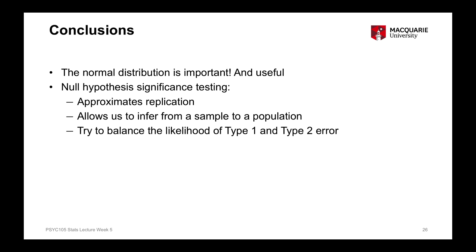Using p-values in the way that we do allows us to almost mimic the replication process. We wouldn't need to use p-values if we could just undertake the same study a hundred times and see what the average effect or relationship is. So the idea of using p-values kind of approximates the idea of replicating a study a number of times. They also allow us to infer information about a particular effect from a sample back to a wider population — and remember that's always what we're trying to do. Because we can't collect data from everyone in that population, we use the sample as a representation of the population, analyze the sample data, and then make conclusions about whether there is an effect in the wider population.